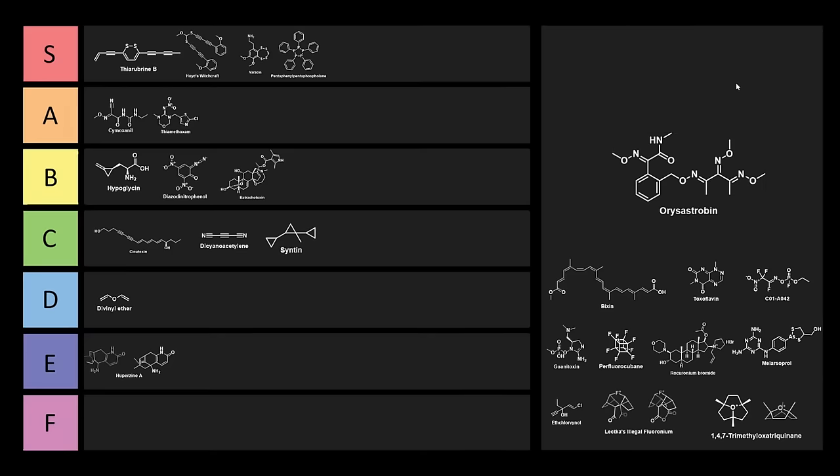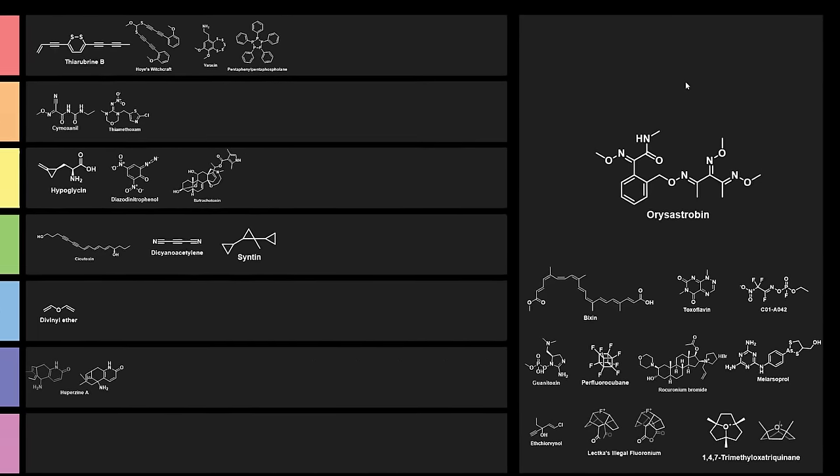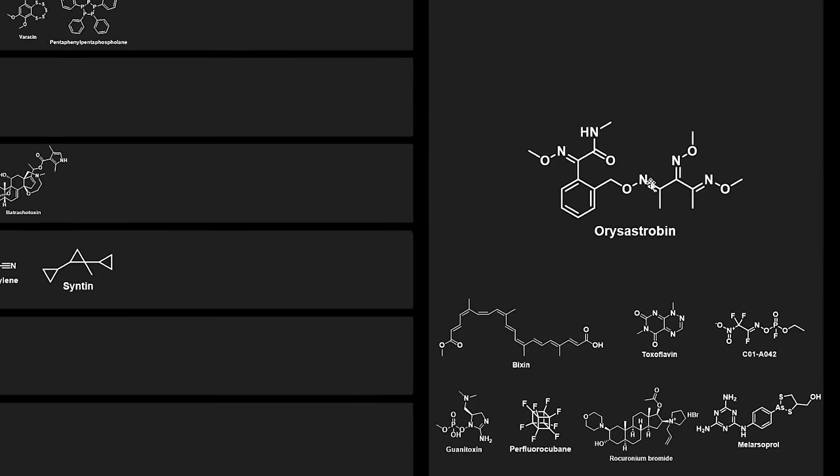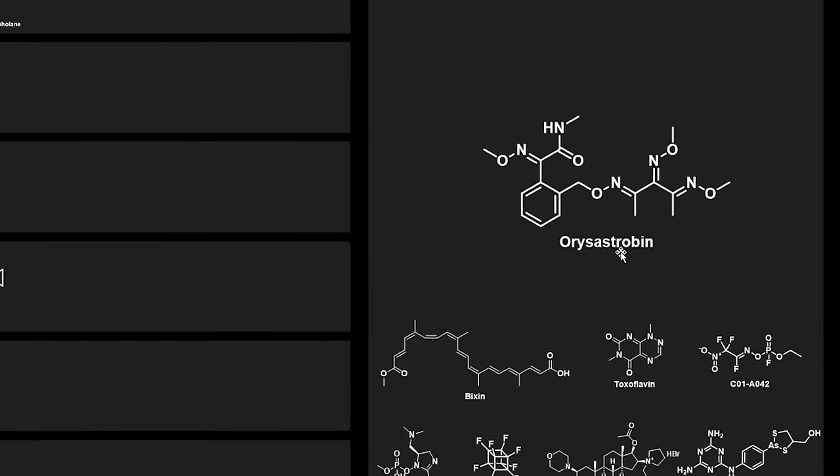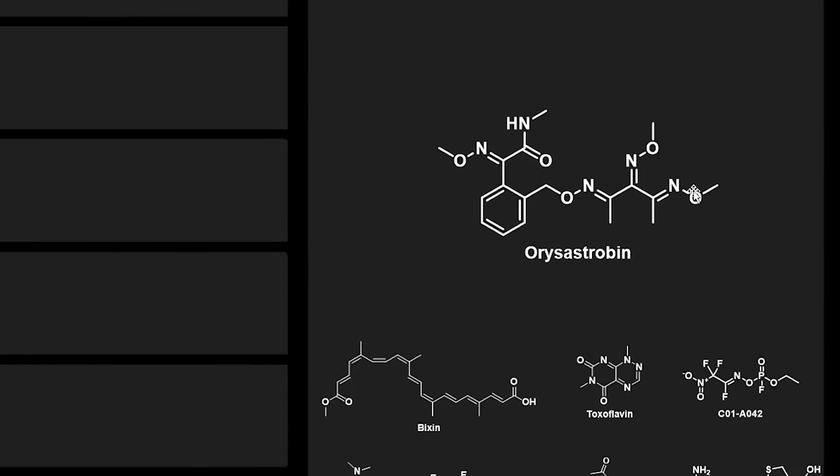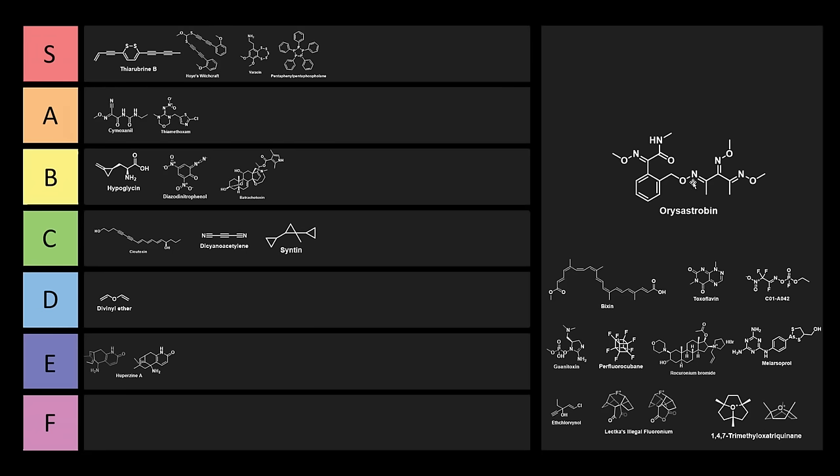Next, we have Arisostrobin. Arisostrobin is really gross-looking, because there's 1-oxime, 2-oxime, 3-oxime, 4-oxime. And here, we have 3-oximes in a row. This is not a nice-looking chemical. I can't even imagine how this was made. This is used as a rice fungicide, and it's a strobolurin-type fungicide used to control leaf and panicle blast, as well as sheath blight in rice.